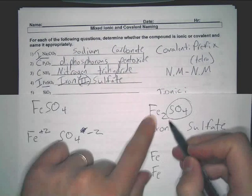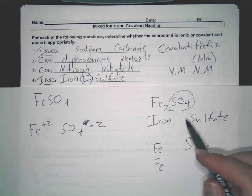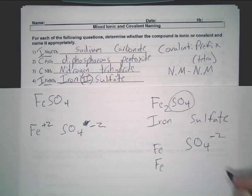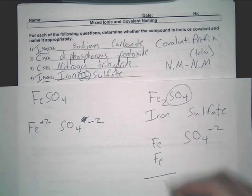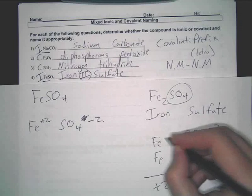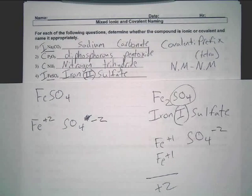In this formula, how many irons do we have? Two. That little two, again, means you have two irons. Now, if sulfate is negative two, what must each of these irons be to add up to positive two to cancel them out? Plus one. One, which would make this iron one sulfate.